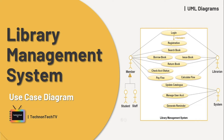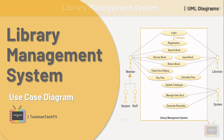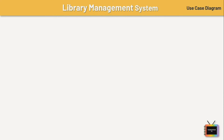Checking the status of their account and paying the fine. The purpose of a use case diagram in UML is to demonstrate the different ways that a user might interact with the system. It can summarize the details of your system's users and their interactions with the system. To build one, we'll use a set of specialized symbols and connectors.